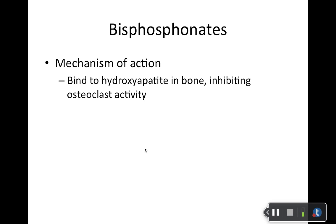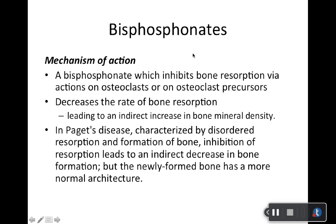Bisphosphonates — these are important for osteoporosis and you'll see these prescribed a lot. Mechanism of action: they basically inhibit osteoclast activity. The osteoclast are the cells that break down the bone — osteoclast break it, osteoblast build it. So bisphosphonates inhibit the breakdown of bones. They also work on osteoclast precursors to decrease the rate of bone resorption, and they increase bone mineral density — highlight that as a big advantage.